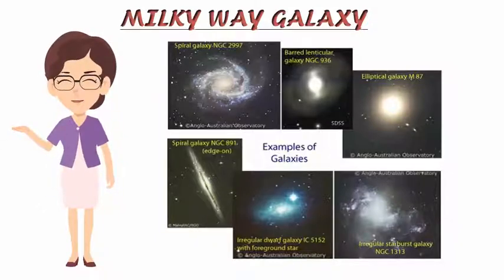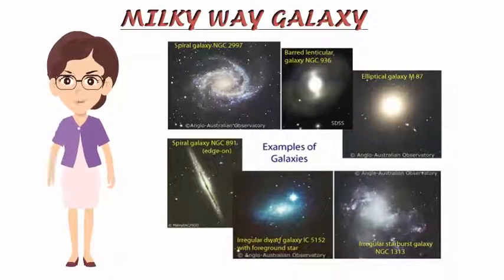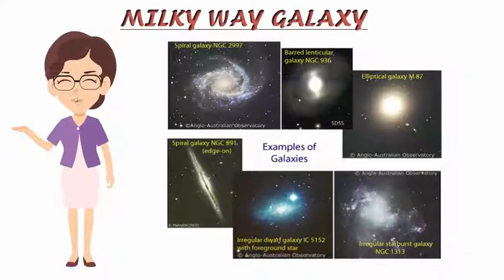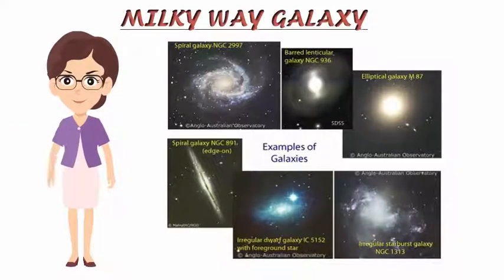Galaxies may be anywhere from 1 to 100,000 light-years across and are typically separated by millions of light-years of intergalactic space. They are grouped into clusters, which in turn can form larger groups called superclusters and sheets or filaments.